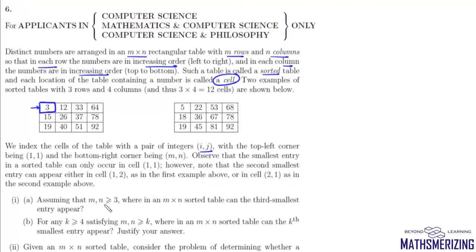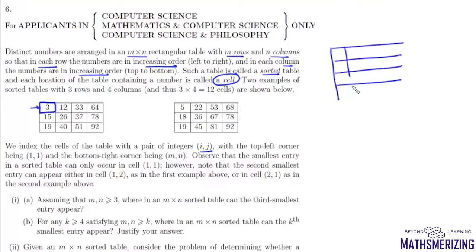The first question, assuming m×n is greater than or equal to 3, asks: where in an m×n sorted table can the third smallest entry appear? If we consider this m×n matrix, the smallest item will be in cell (1,1), call it a1. The second smallest can be either in cell (1,2) or in cell (2,1).